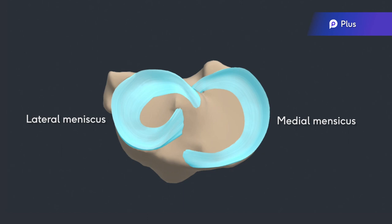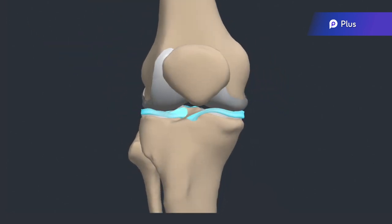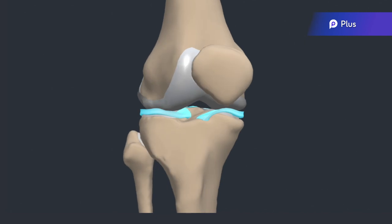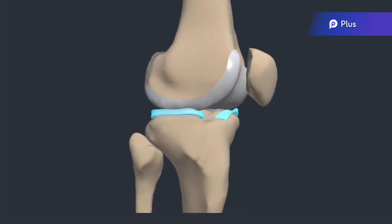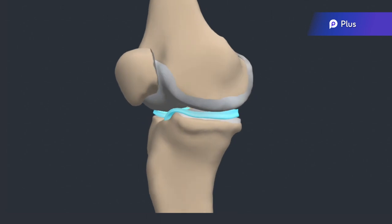They are attached to the tibial plateaus through coronary ligaments and are concave superiorly to accommodate the surfaces of the femoral condyles. The menisci increase the area of contact between the tibial and femoral articular surfaces, in turn increasing the congruence of the joint and improving weight distribution and shock absorption.